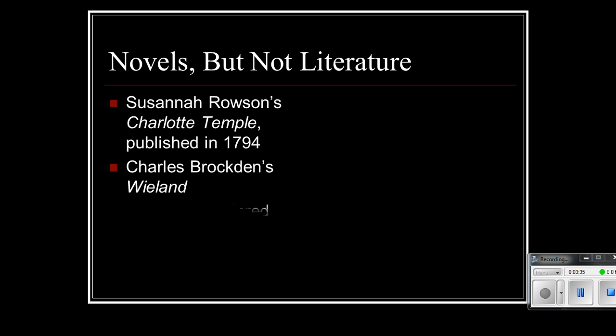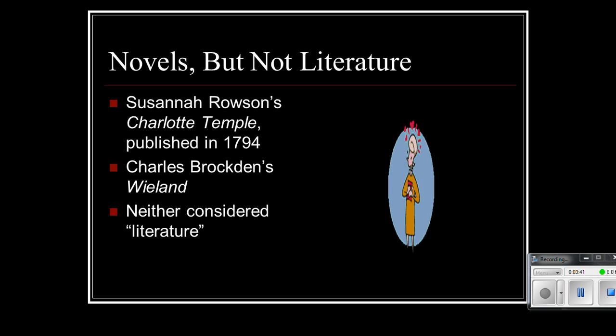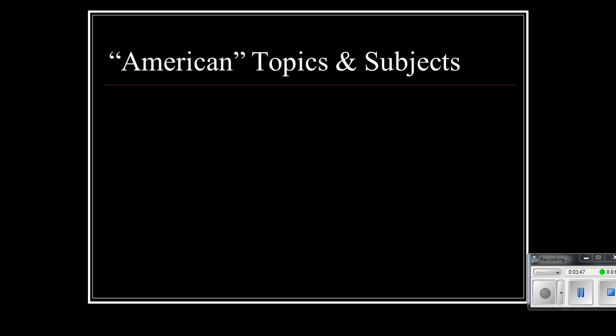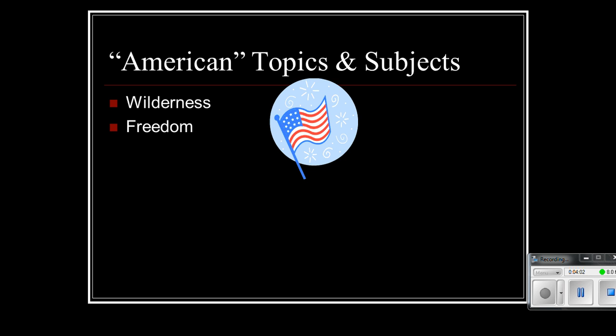We also have Charles Brockton's Weyland, and neither one of these, along with the many others that were written during this time period, were considered literature. They really kind of fell more into the category of sentimental writing. What we do find with writing during this time period is that authors are starting to write about more American topics, more American subjects. We still don't have a national style, but we do have some national topics. We have the wilderness. We have freedom. We just won a revolution. We considered ourselves the most powerful country in the world — we just basically defeated the most powerful country in the world, and we're pretty cocky about it, and so we want to write about it.